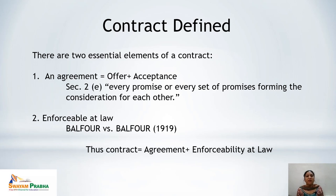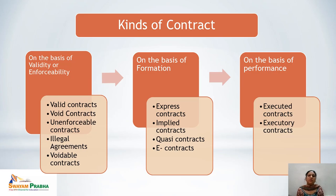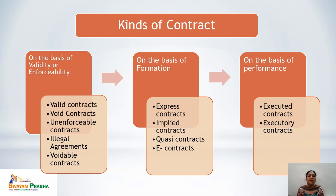Contracts can be divided on three bases: first, on the basis of validity or enforceability; second, on the basis of formation; and third, on the basis of performance. Under validity or enforceability, there are valid contracts, void contracts, unenforceable contracts, illegal agreements, and voidable contracts.